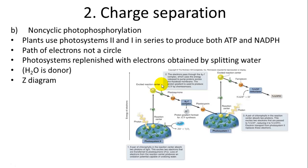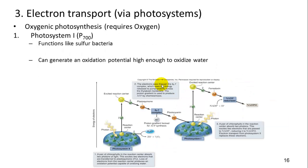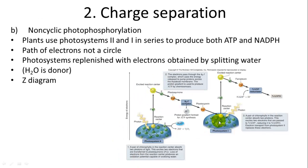We'll draw a Z-diagram in class — it looks more like an M — and go through the different steps of the electron transport chain.